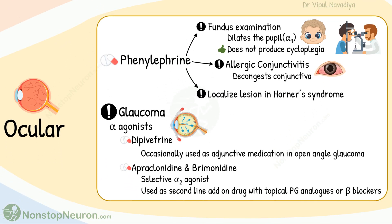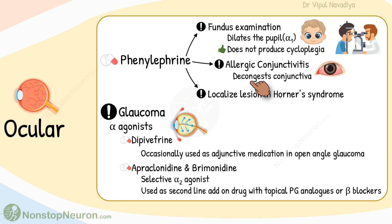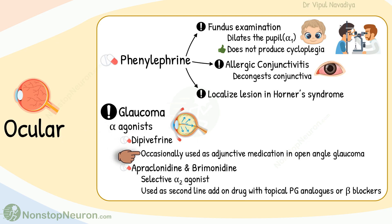Now let's see the uses in the eye. Phenylephrine is used for fundus examination — it dilates the pupil to clear the view to see the fundus. The advantage is that it does not produce cycloplegia, so accommodation is not compromised. In allergic conjunctivitis, it decongests the conjunctiva. It is also used to localize the lesion in Horner's syndrome. For glaucoma, alpha-agonist drugs are used. Dipivefrin is occasionally used as adjunctive medication in open-angle glaucoma. Apraclonidine and brimonidine are selective alpha-2 agonists used as second-line add-on drugs with topical prostaglandin analogs or beta-blockers.